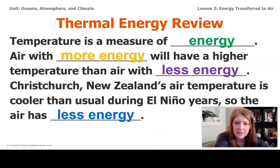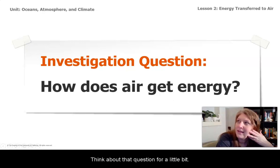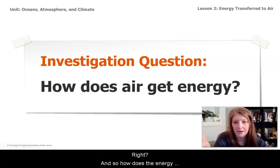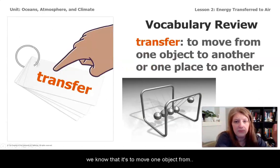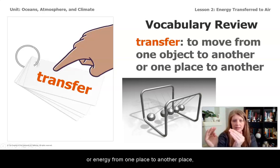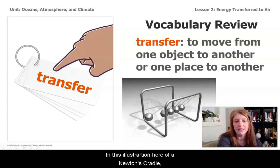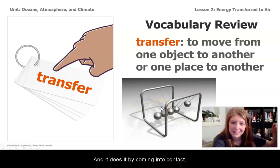The question we really want to know now is: how does air get energy? We know that the source of all energy is from the sun. So how does the energy transfer from the sun to earth? When we think of the word 'transfer,' we know it means to move energy from one place to another. This illustration of a Newton's cradle is showing the energy transferring from one sphere to the next by coming into contact.